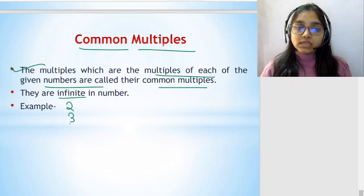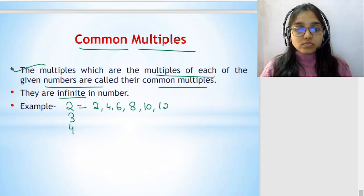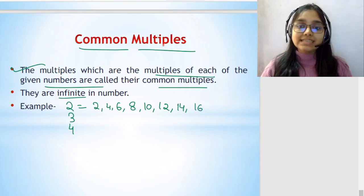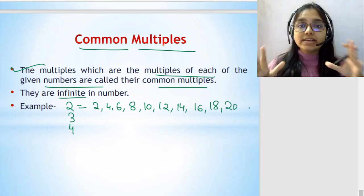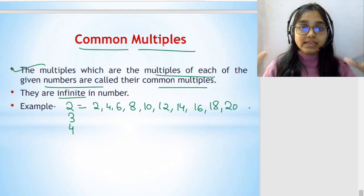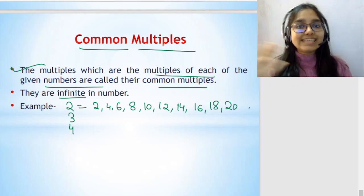So for an example, 2, 3, 4. What are the multiples of 2? 2 into 1 is 2, 2 into 2 is 4, 2 into 3 is 6, 2 into 4 is 8, 2 into 5 is 10, 2 into 6 is 12, 2 into 7 is 14, 2 into 8 is 16, 2 into 9 is 18, 2 into 10 is 20. Let's write up to 10, because multiples are infinite, they have no end. That's why we will stop at 20.